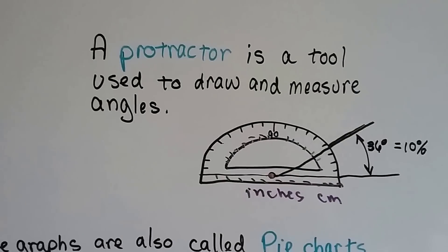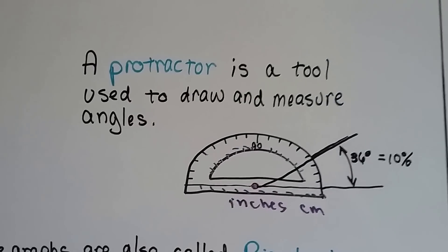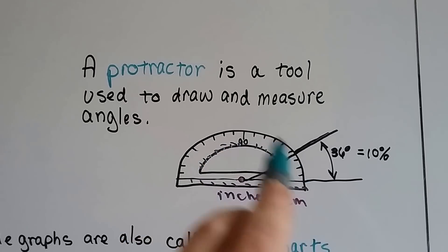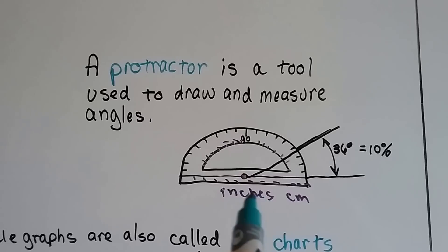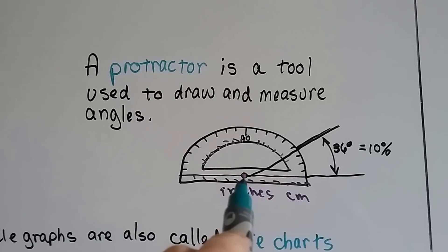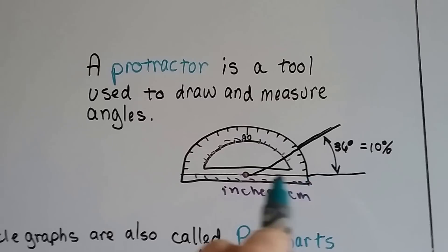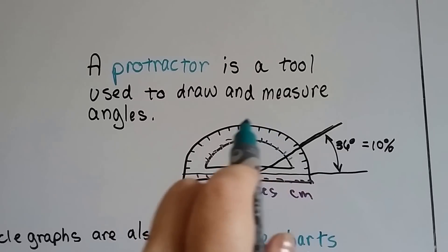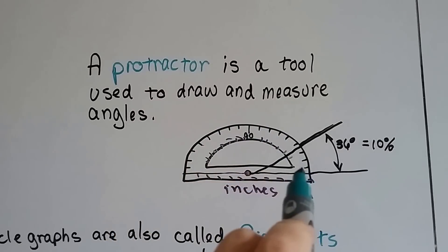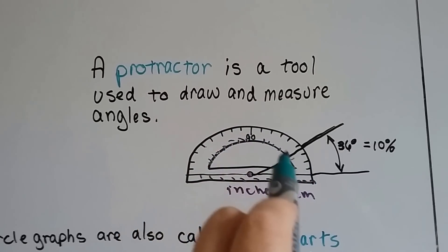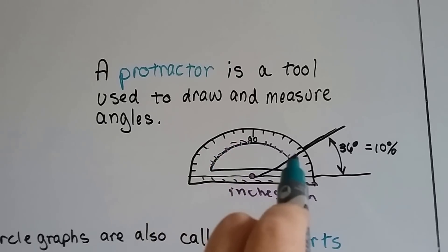There's a protractor. It's a tool used to draw and measure angles. It's a little clear plastic tool. I'm going to show you one in a second. It's got a hole in it right here, a measuring line here, and degree measures coming around the outside and on the inside going the opposite direction.